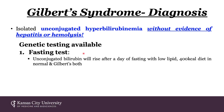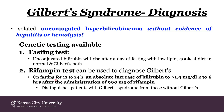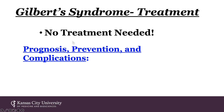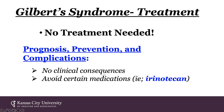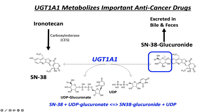Diagnosis of Gilbert's syndrome includes isolated unconjugated hyperbilirubinemia without evidence of hepatitis or hemolysis. There's a fasting test and a rifampicin test that can be used. In Gilbert's syndrome, no treatment is needed and there are no clinical consequences. However, patients must avoid certain medications such as irinotecan because of reduced UGT activity — their ability to clear certain medications will be compromised and they'll be at increased risk for toxicity. Pictorially, patients with Gilbert's syndrome are unable to produce the glucuronide efficiently, so SN-38 will back up, and this compound is incredibly toxic.